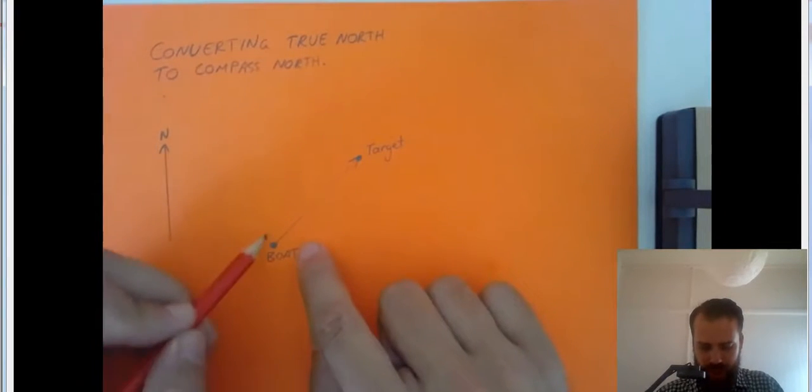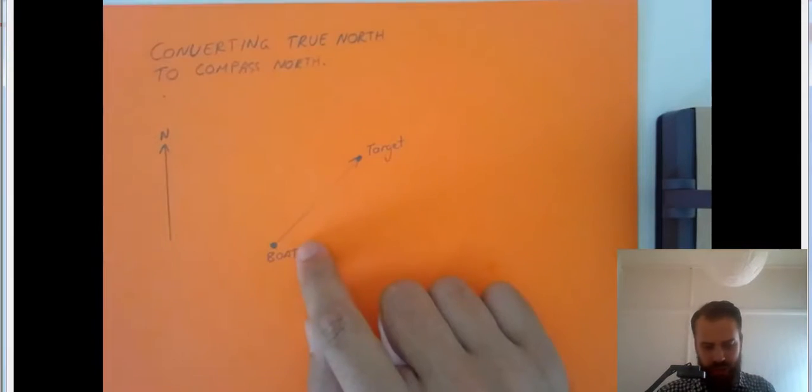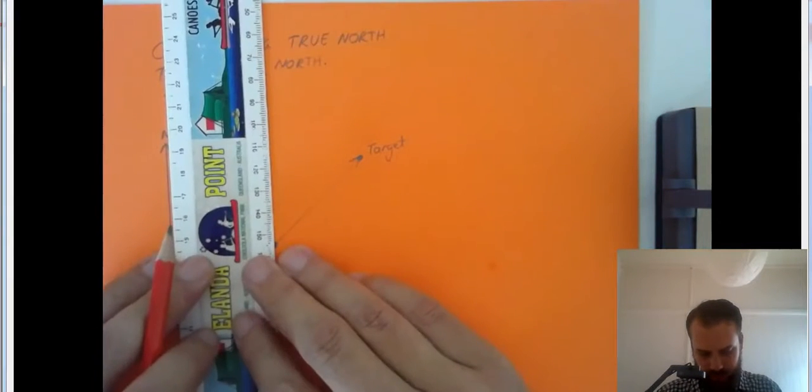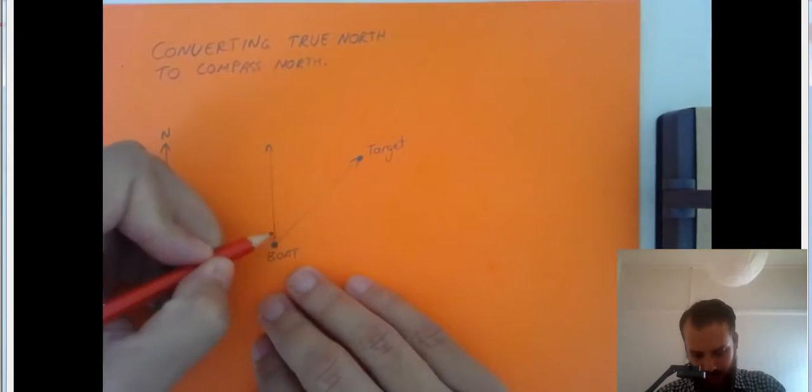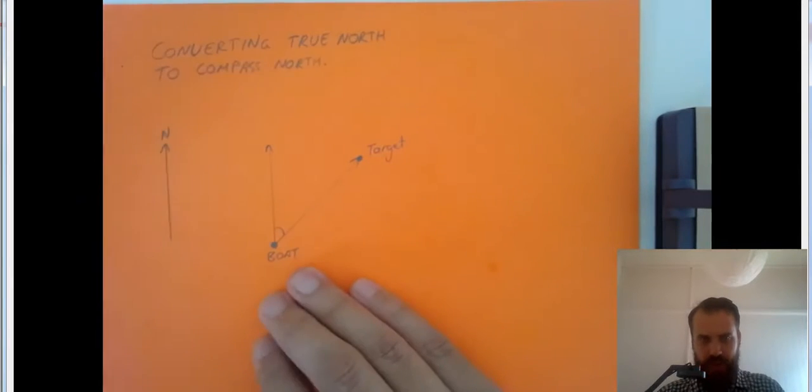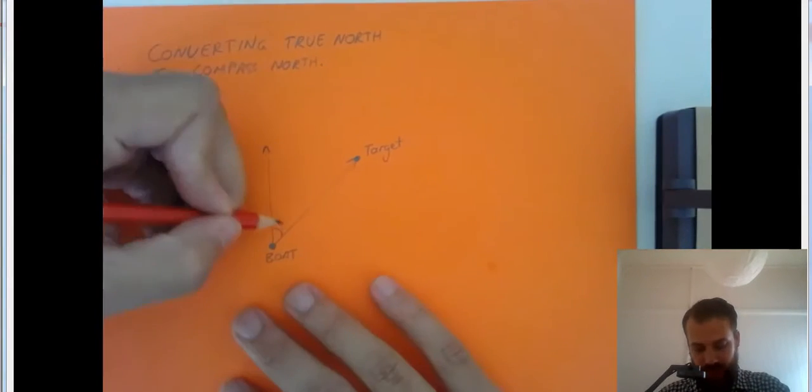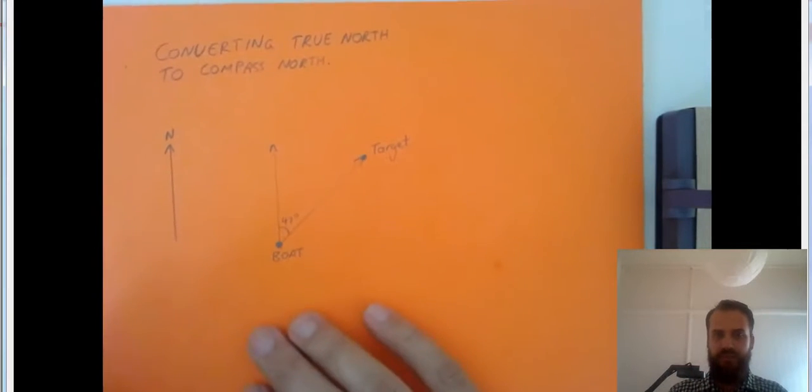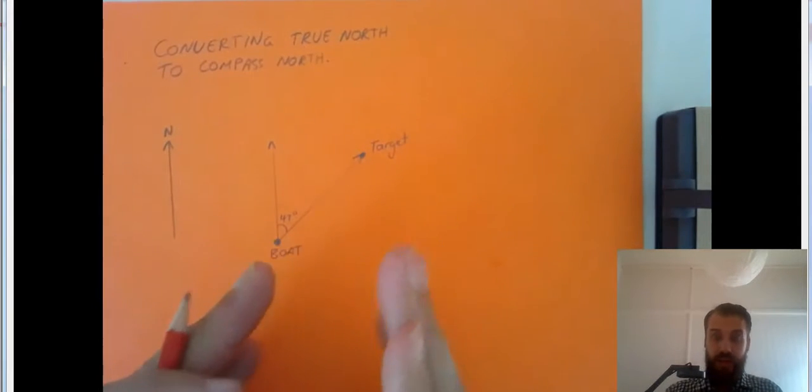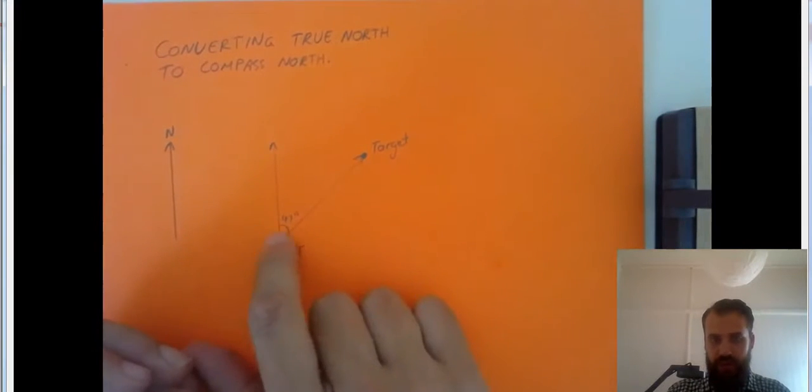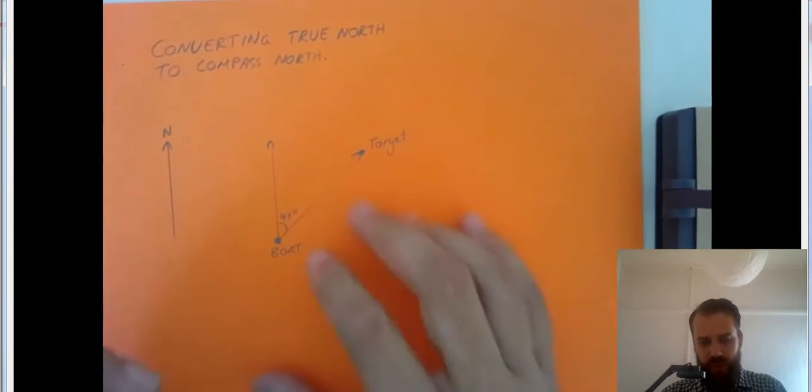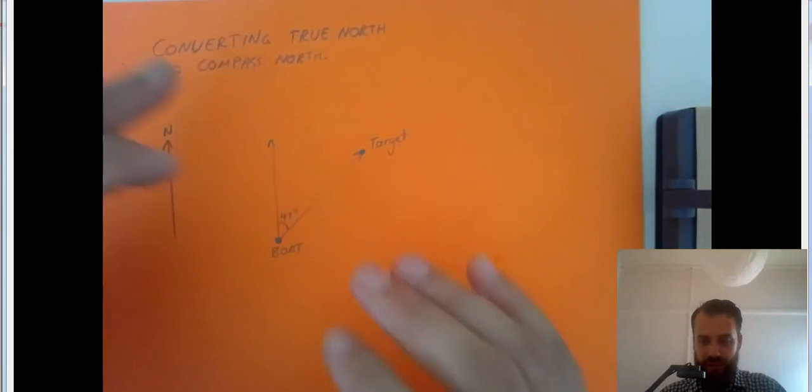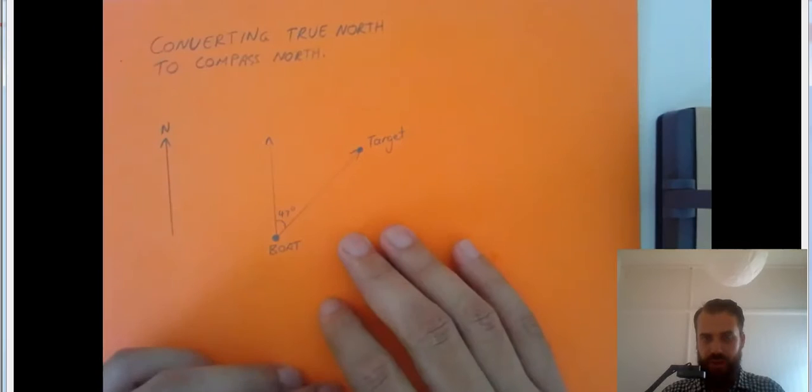If our boat wants to travel towards that target, we can't just measure that angle. There's my North line. Now I'm going to measure that angle. I'm not because I don't feel like it. But I'm going to tell you that it's 47 degrees. Now if we jump in our boat and we go on a bearing of 47 degrees, we get our compass out and we go on 47 degrees, we're not going to hit our target because we're following magnetic compass North when we should be following True North. So we need to convert.